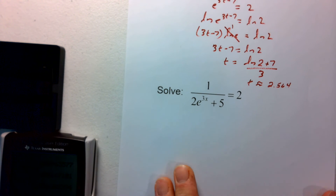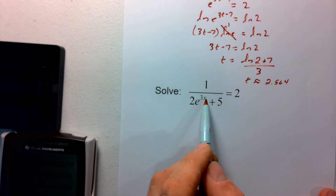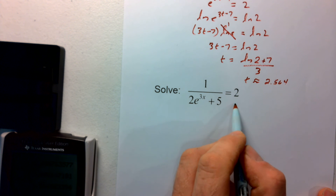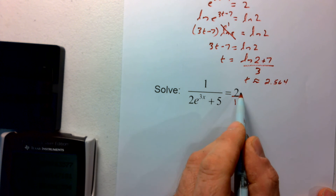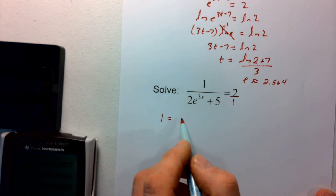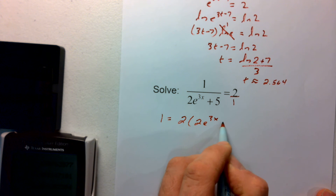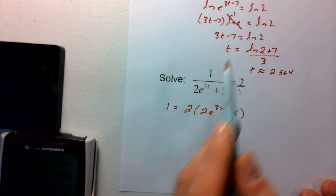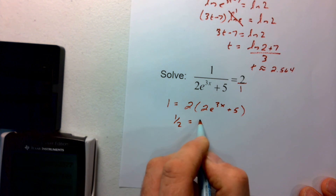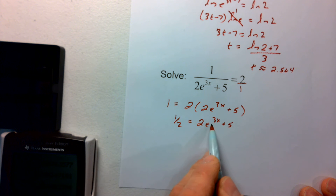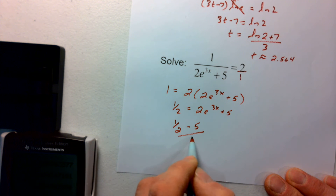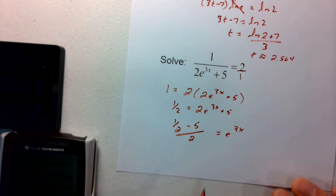One last example — a complex-looking one where x is in the exponent of e but also in the denominator. We can multiply the denominator over to the 2, getting 1 equals 2 times 2e to the 3x plus 5. Now divide by 2: 1 half equals 2e to the 3x plus 5. To isolate e to the 3x, subtract 5 and divide by 2, giving 1 half minus 5, divided by 2, equals e to the 3x.